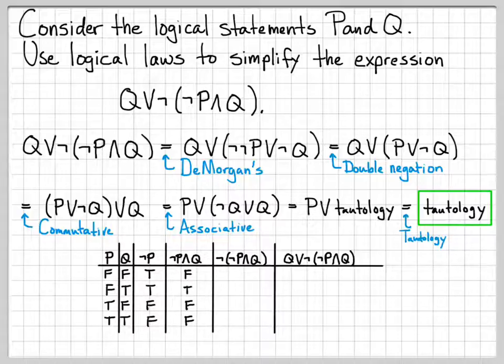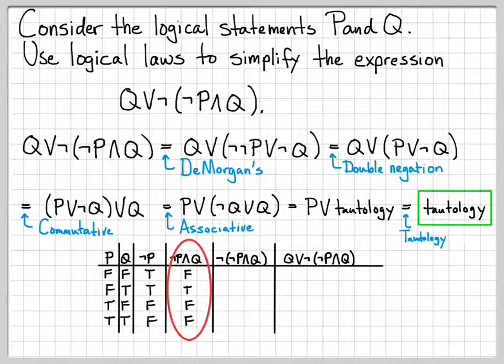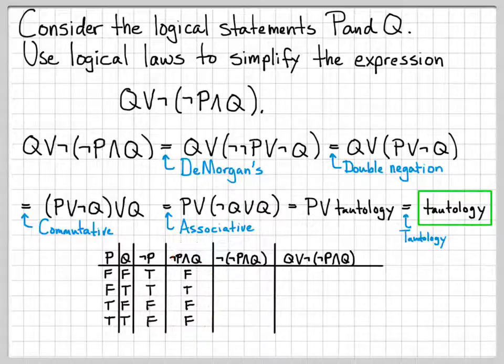So I get F, T, F, F. Now I can construct a column for this just by taking the not of this column. So anywhere I have an F, it will turn to a true, and anywhere I have a true, it will turn to an F. So that's that column.